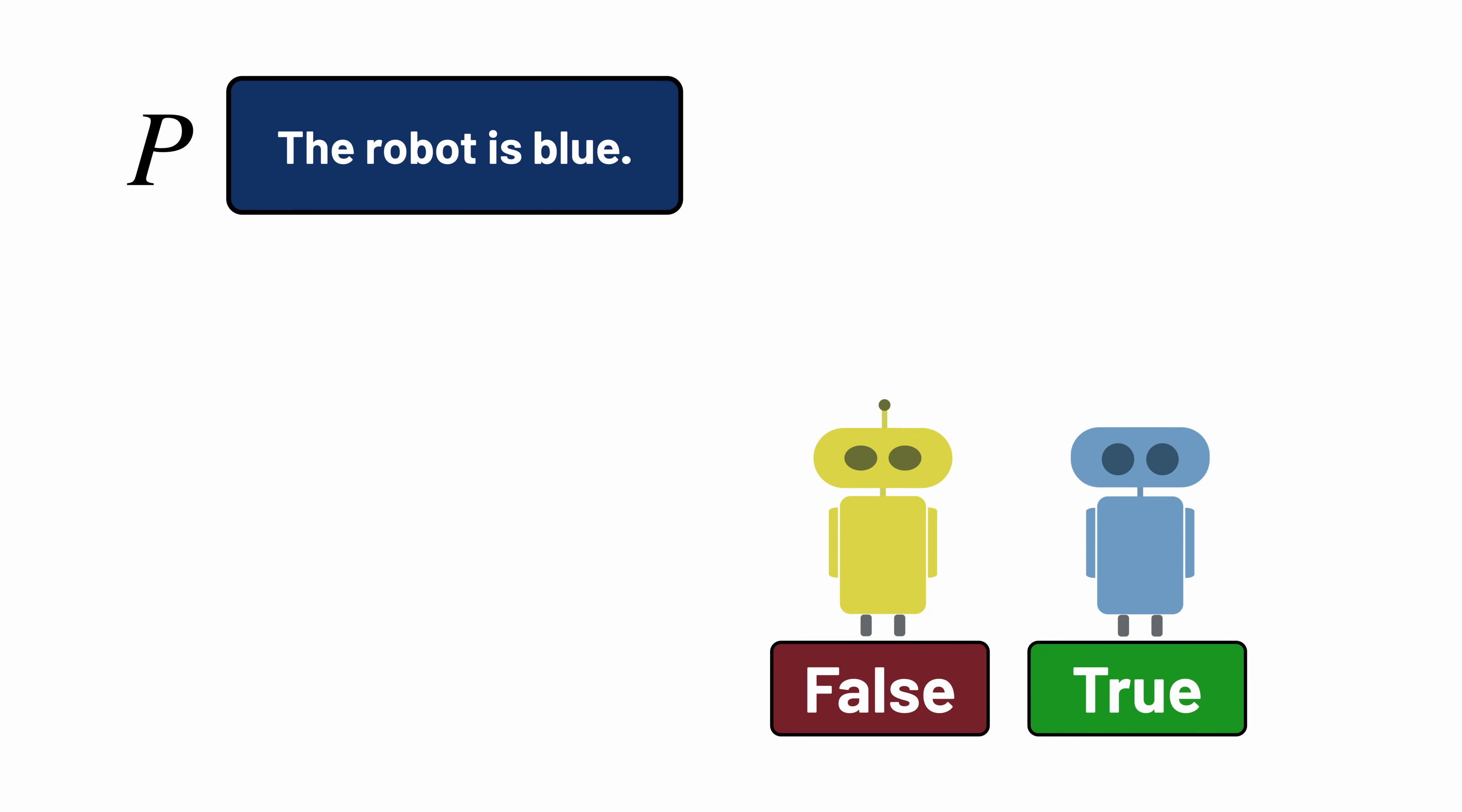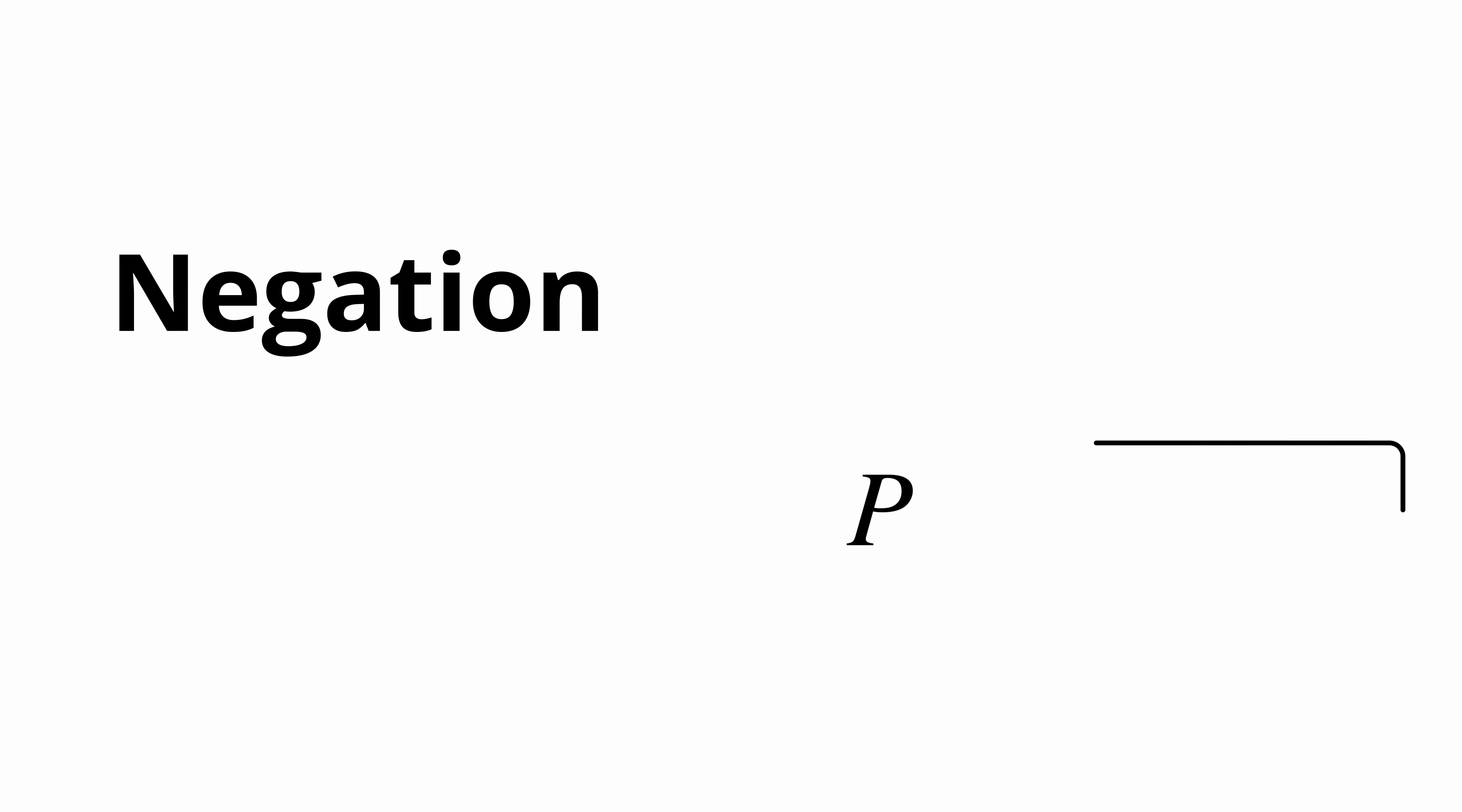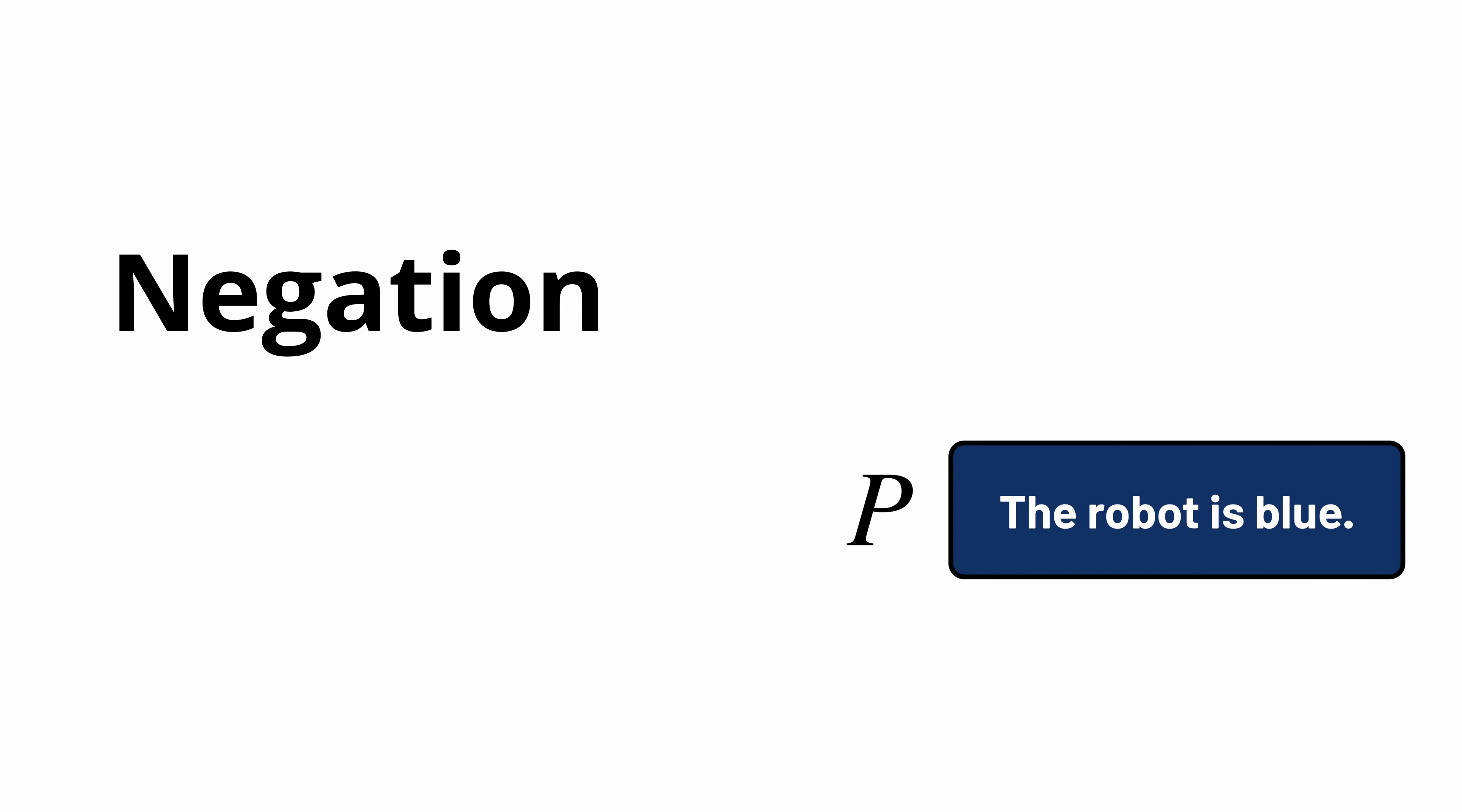Where things start to get more interesting is when we start modifying and combining logical variables into more complex logical formulas. One way to modify a logical formula is to take its negation. If P is a proposition, like 'the robot is blue,' then we can use this negation symbol to represent the negation of P, which we often call not P. In this case, not P is true when the robot is not blue.